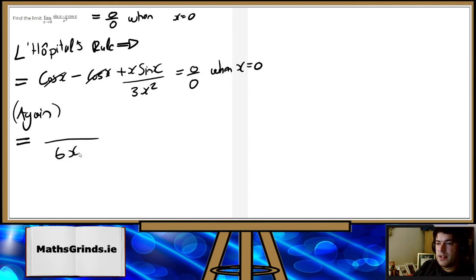So that becomes sine x plus x cos x over 6x. And if we put in x is 0, we get 0 over 0 when x is 0. So we can use it again.